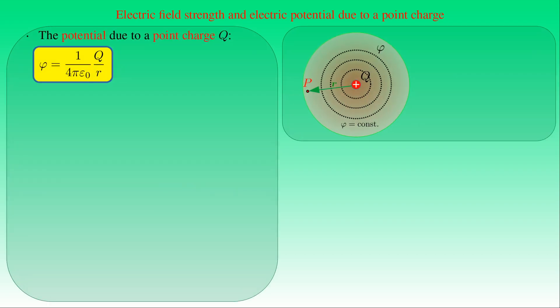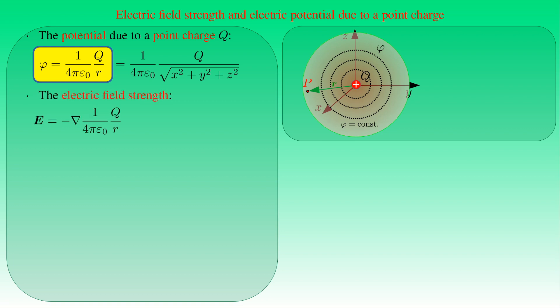As an application, we derive the electric field strength E from the potential due to a point charge Q: φ = (1/4πε₀) × Q/R. Since φ depends only on the distance R (spherically symmetric), the equipotential surfaces are concentric spheres. Attaching the coordinate origin to Q, we compute E = −∇φ = −∇(Q/4πε₀R). We need only ∇(1/R) = −(1/R²)∇R. Computing ∇R in Cartesian coordinates gives ∇R = R/R = eR.